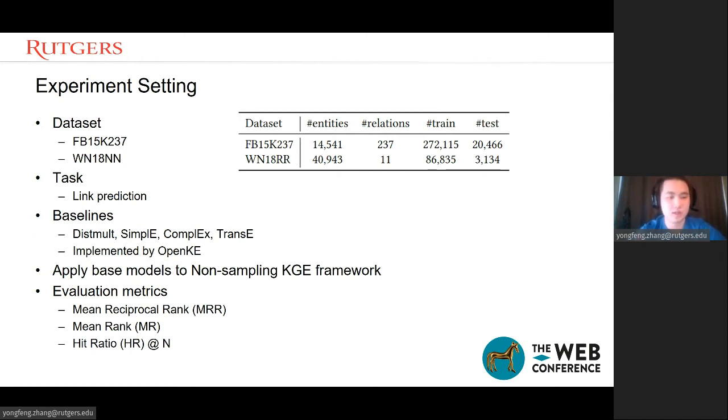Here is our experiment part. We use two typical data sets, and the task is link prediction. We use four baselines, as we mentioned above: DistMult, SimplE, ComplEx, and TransE. And we use the baseline implemented by OpenKE. It is an open source project implementing different kinds of knowledge graph embedding models. We apply these base models to non-sampling knowledge graph embedding framework and compare the performance before and after using our framework. We use three metrics to evaluate: MRR, mean rank, and hit ratio at N.